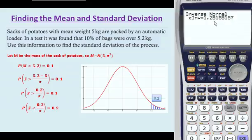And we get 1.28155. That means that this value here, 0.2 over sigma, is equal to 1.28155.